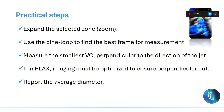You must measure the vena contracta perpendicular to the direction of the jet. If the jet is eccentric, measure perpendicular to that eccentric jet. This is very important because it differs from the method used to measure the PISA radius — for PISA, we do not measure perpendicular to the jet but rather in relation to the Doppler beam.